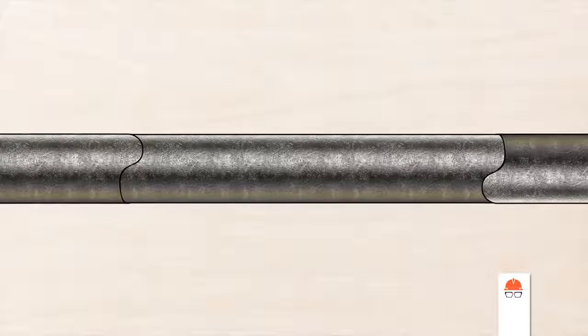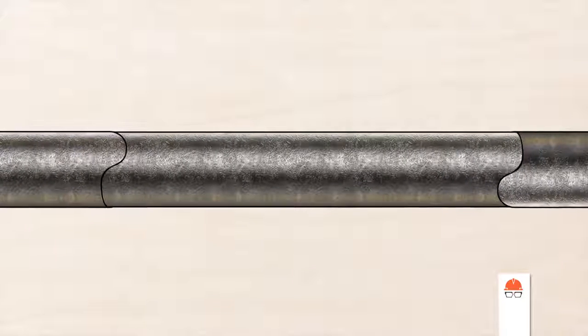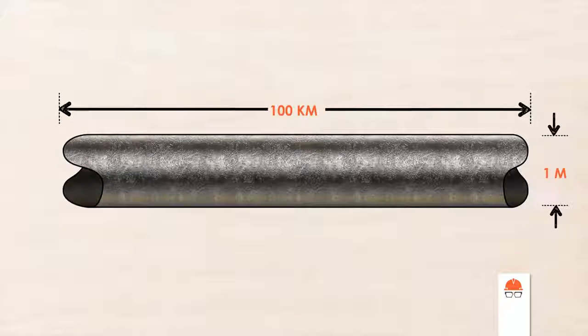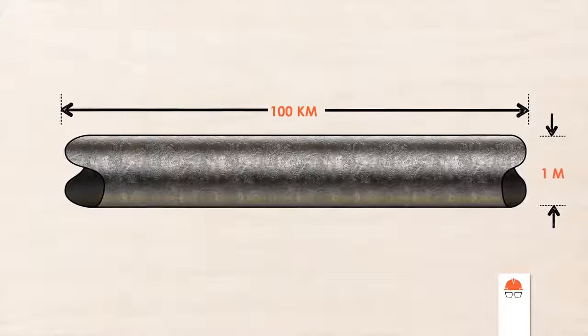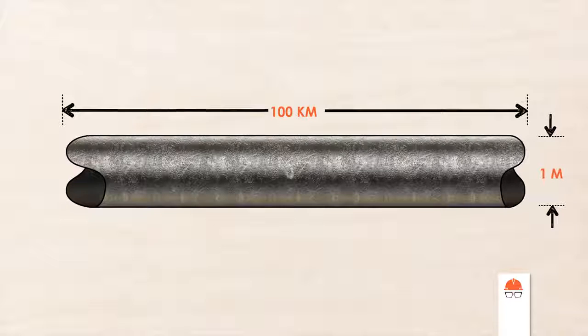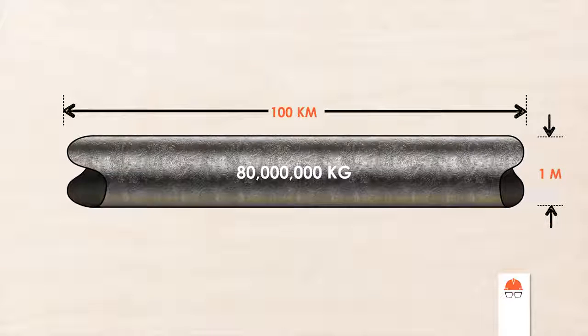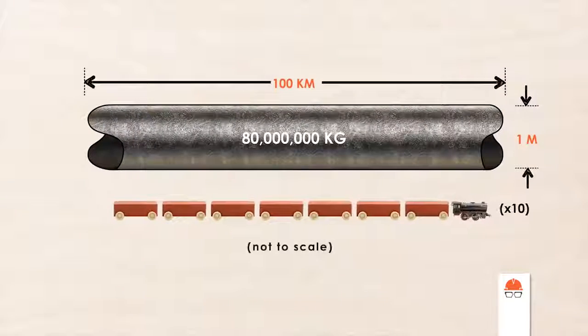Let's do a quick calculation. If you have a pipeline carrying water that is 1 meter in diameter and runs for 100 kilometers, a fairly average-sized pipeline, the mass of water in the pipe is about 80 million kilograms. That's a lot of kilograms. In fact, it's the equivalent of about 10 freight trains.